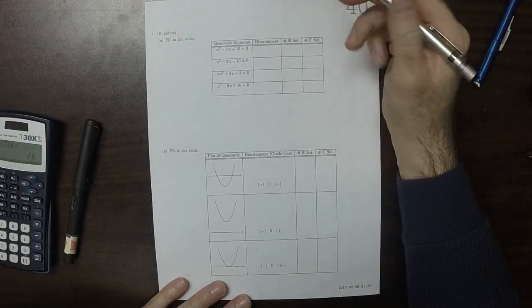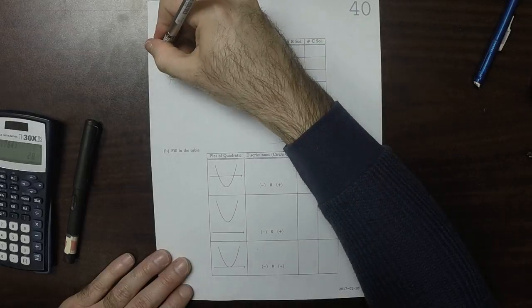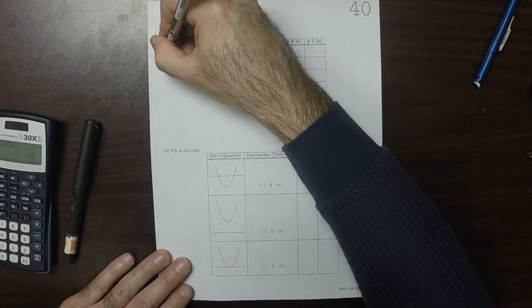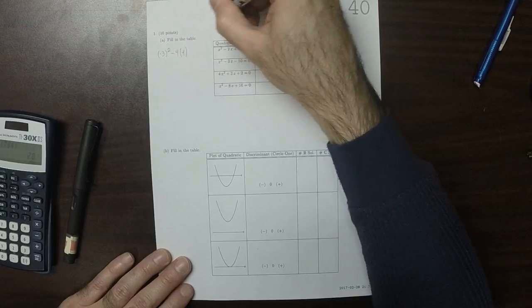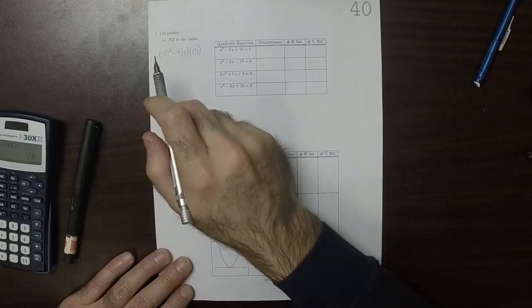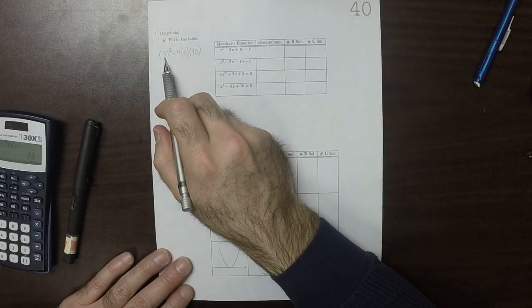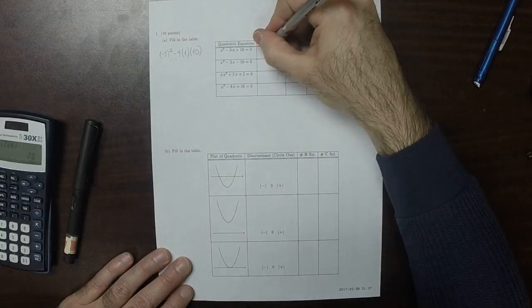We want to compute the discriminant for each one of these. For the first one, that would be negative 3 squared minus 4 times 1 times 10. So that would be 9 minus 40, which equals negative 31.